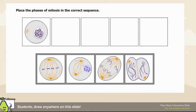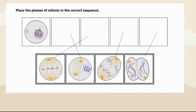Phases of mitosis — we have PMAT. Interphase is first, when things are forming, and then we have PMAT: prophase, metaphase, anaphase, telophase. Prophase is when spindle fibers are forming. Metaphase is when chromosomes line up in the middle. Anaphase is when they start pulling apart to opposite sides. Telophase and cytokinesis is when they're starting to form two separate cells.